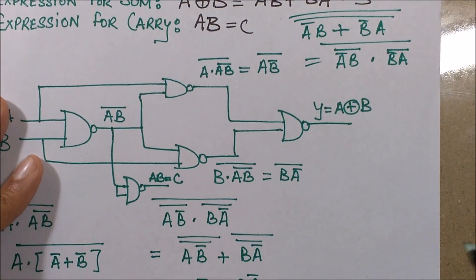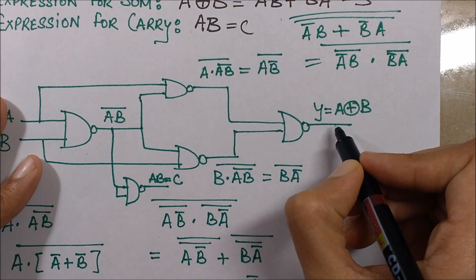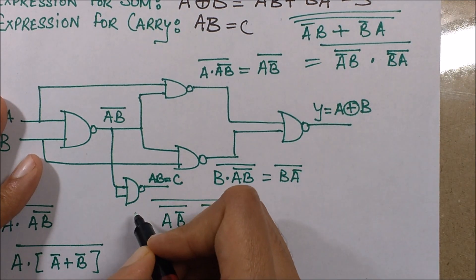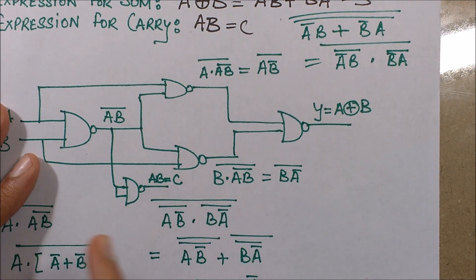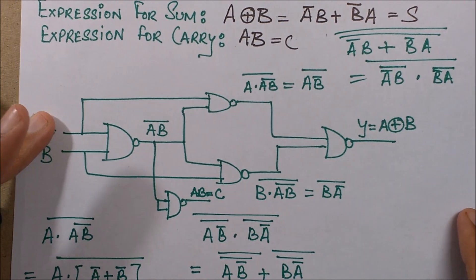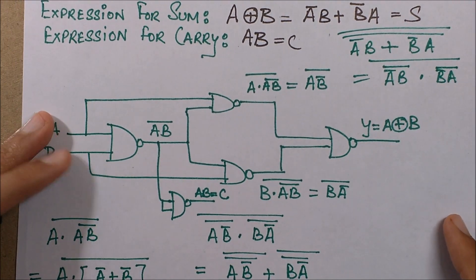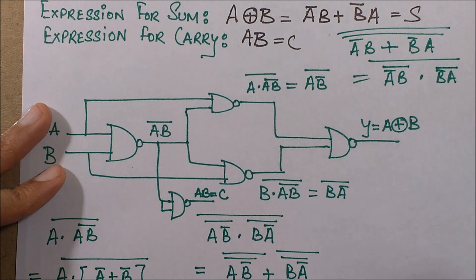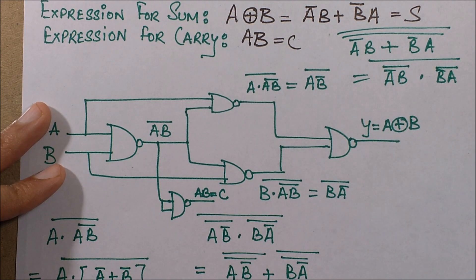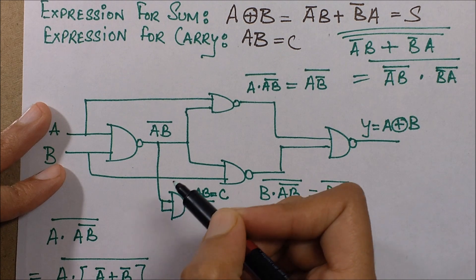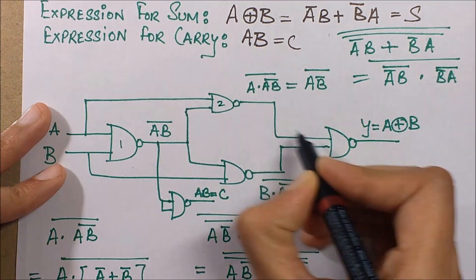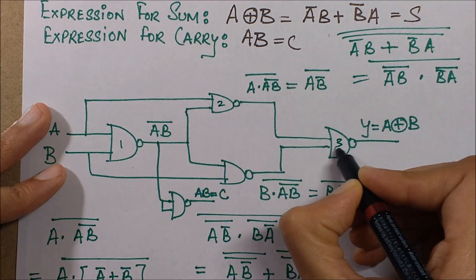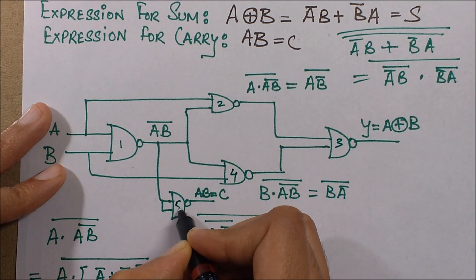Therefore I am able to deliver both the sum and carry. The circuit realization has been completed. Now we will count the number of NAND gates required to form this half adder, and when we count it is 1, 2, 3, 4, and 5.